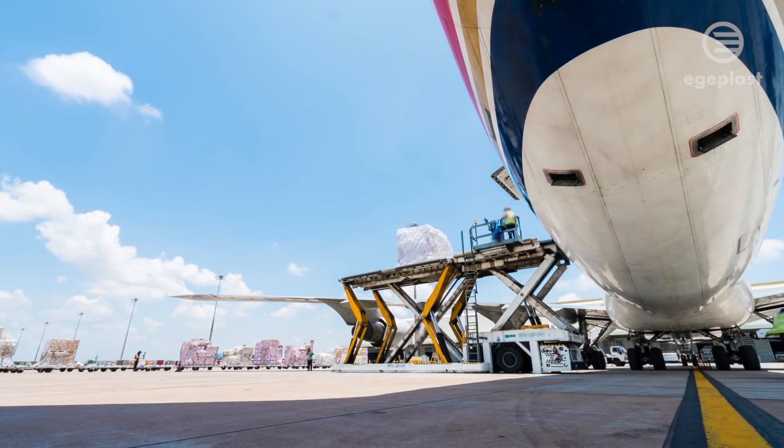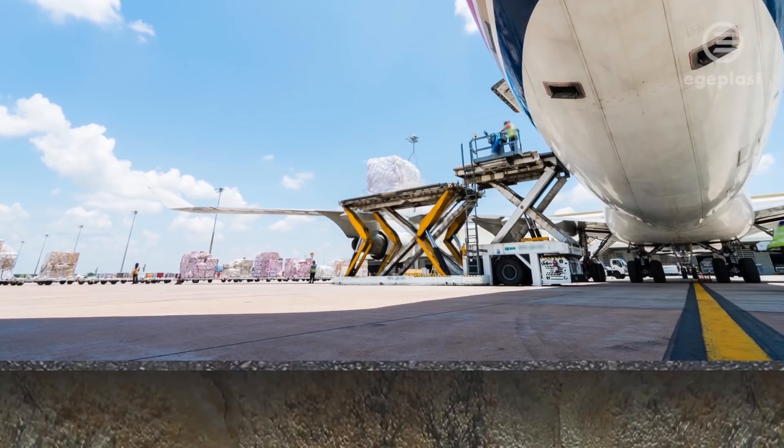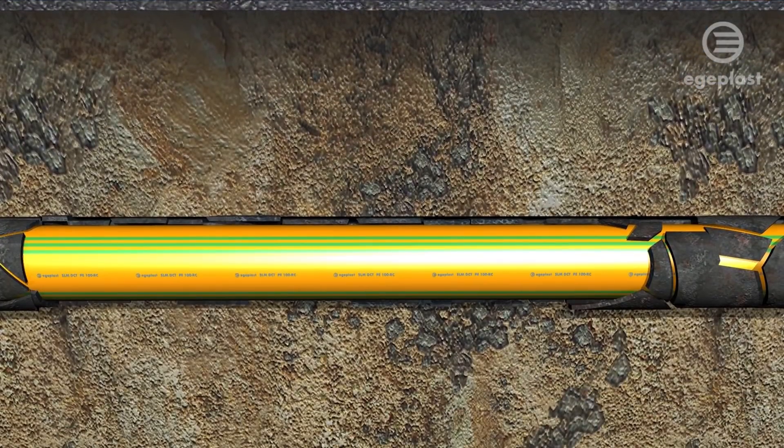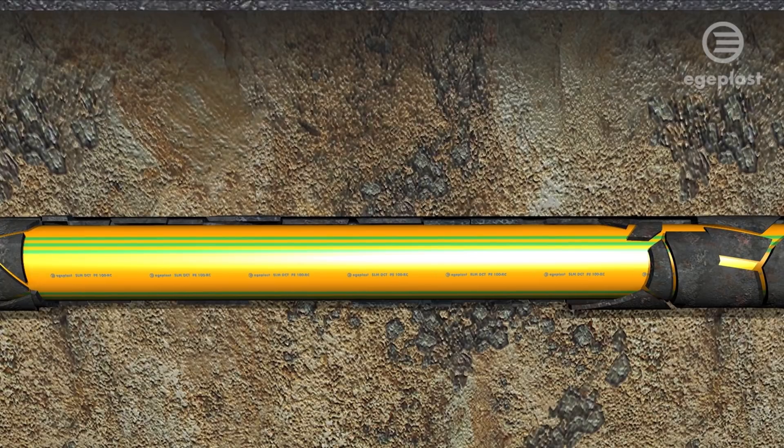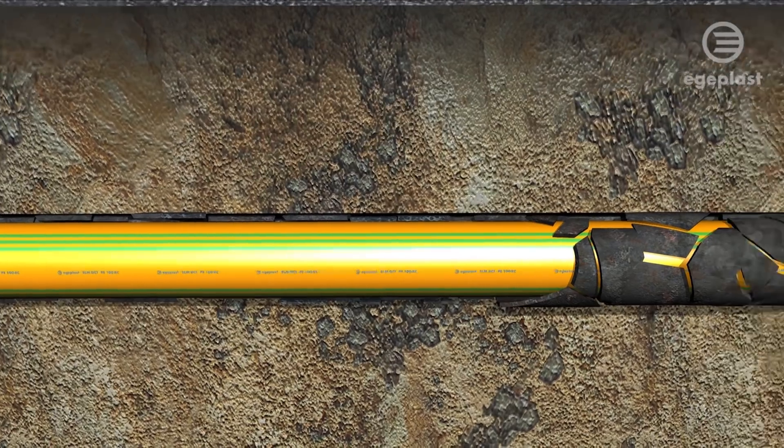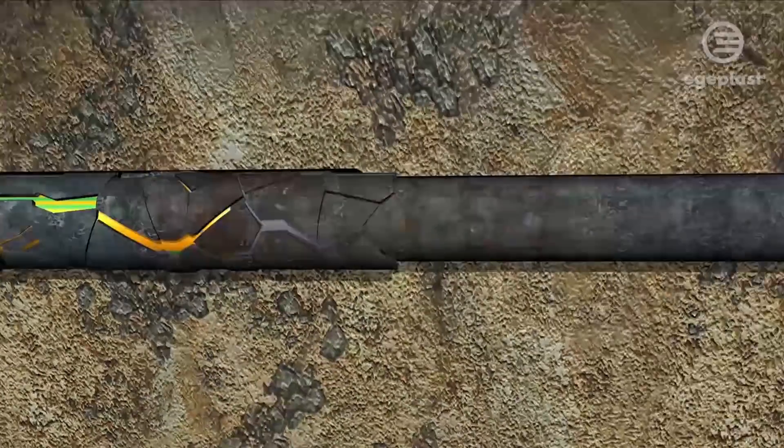Egeplast is a developer of pipe systems which provide planners in charge with uncompromising safety. The Egeplast SLM DCT is a protective layer pipe providing quality monitoring and localization options.